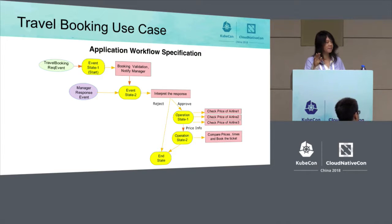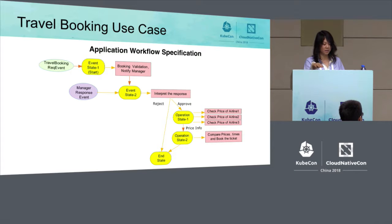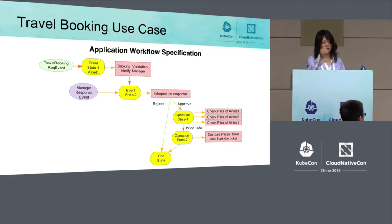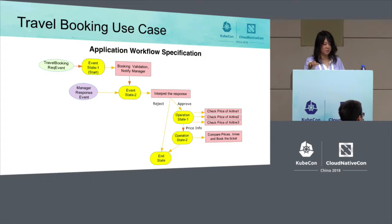After all three functions return, the workflow transitions to the next operation state, passing the price information along. In that state, a function is triggered to compare prices and times, and eventually book the ticket. Then it transitions to the end state.